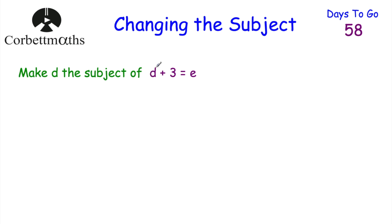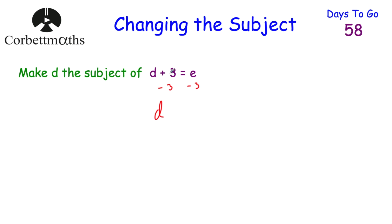Here we want to make D the subject — that means we want D equals, so we want to get D on its own. At the minute we've got this plus 3 here, so we want to get rid of this plus 3. So what we're going to do is subtract 3 from both sides — subtract 3 from the left hand side and subtract 3 from the right hand side. So if we subtract 3 from the left hand side, well we had D plus 3, we take away the 3, so we're just left with D.